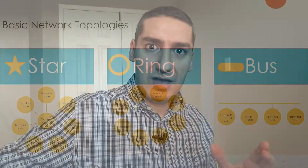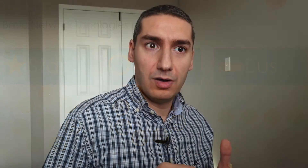In rings, it could be unidirectional or bidirectional. When discussing ring advantages, I'm talking about bidirectional rings, where communication can go both ways. In a bus topology, we have a main channel, and the terminal nodes are connected to this channel.